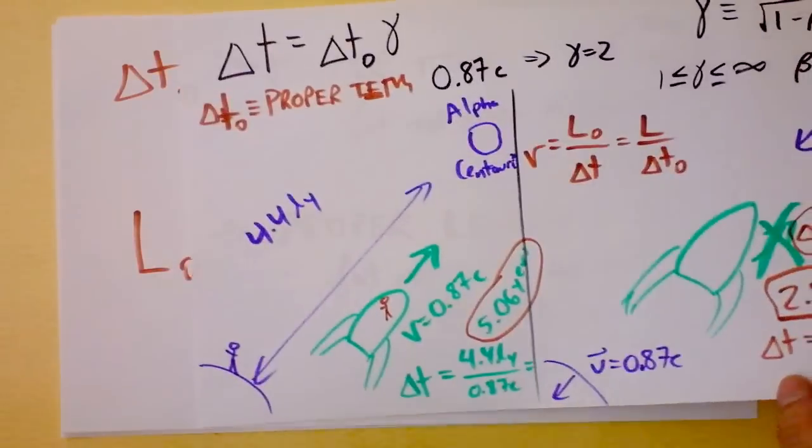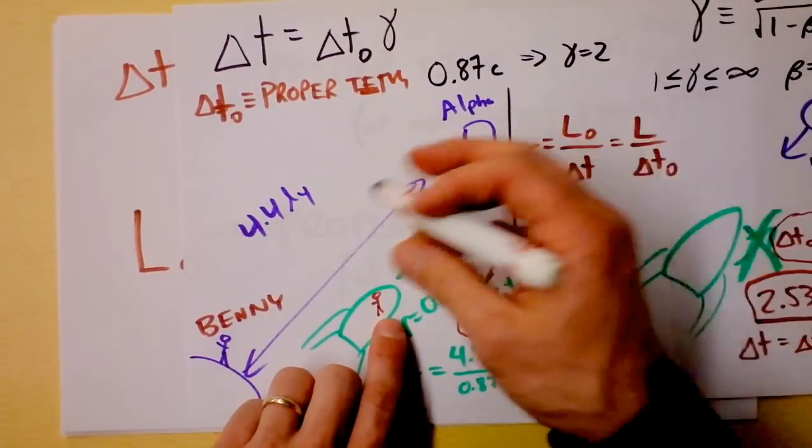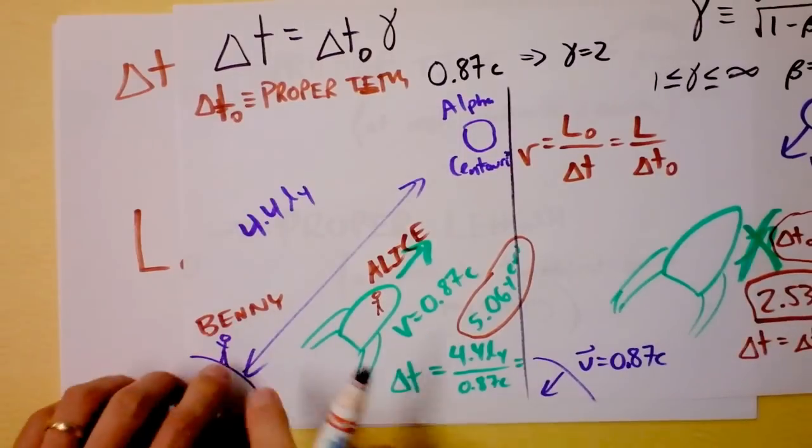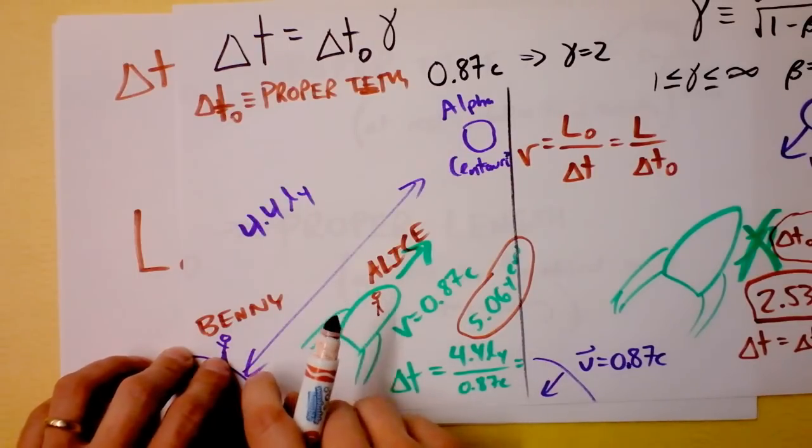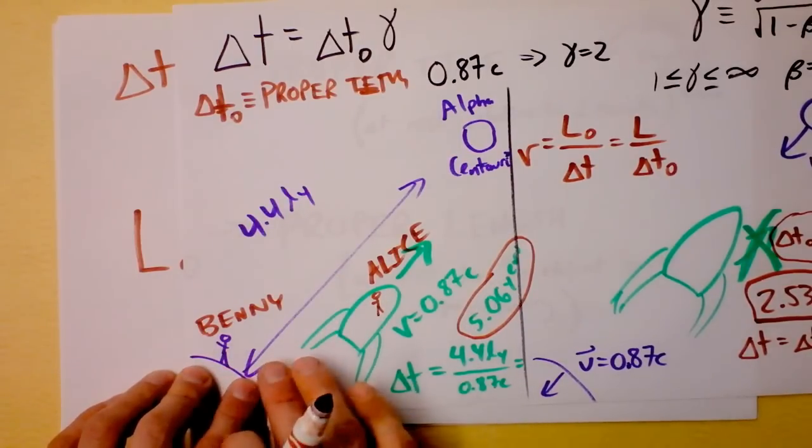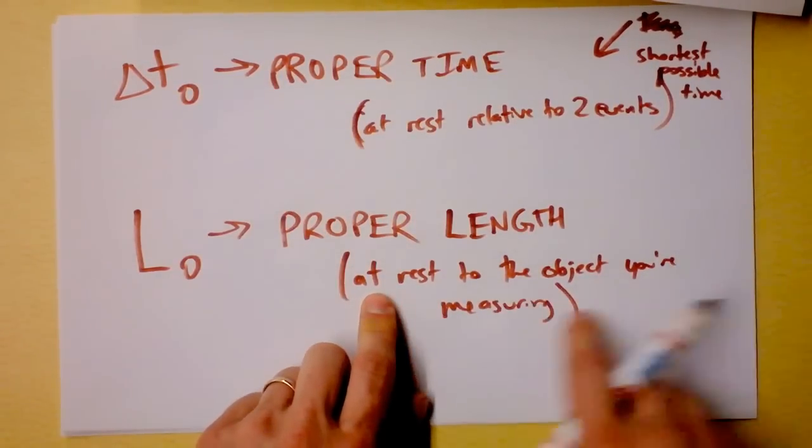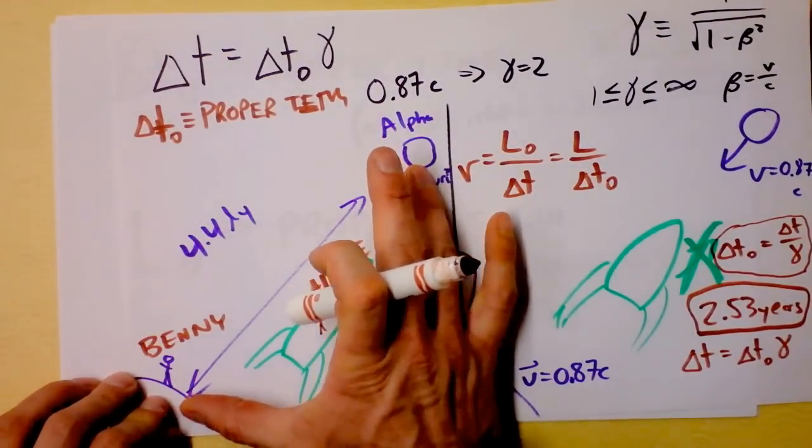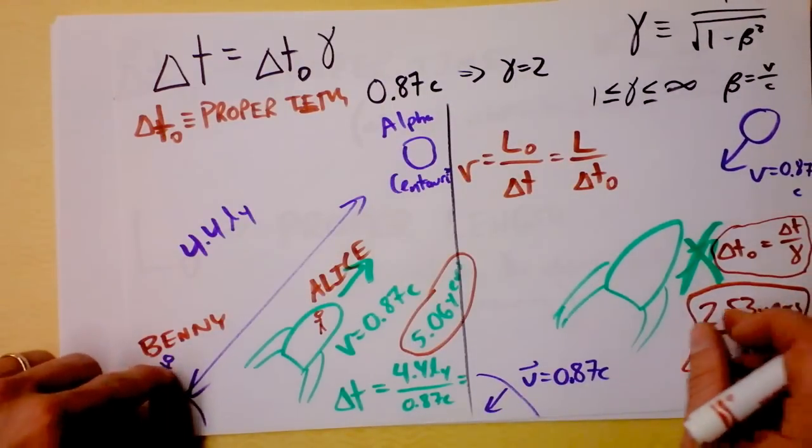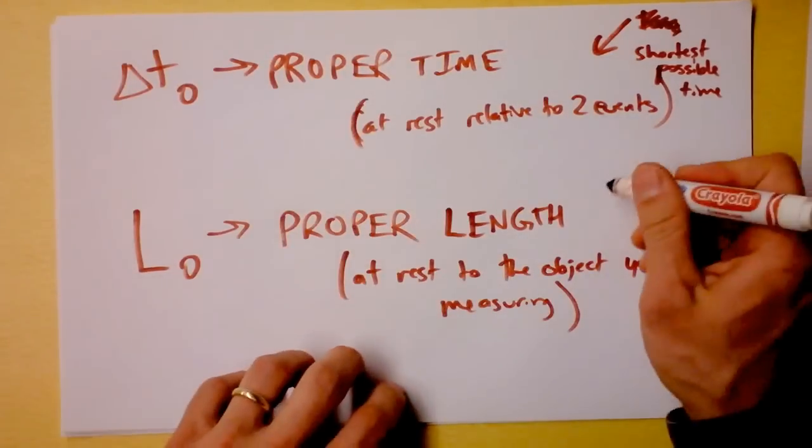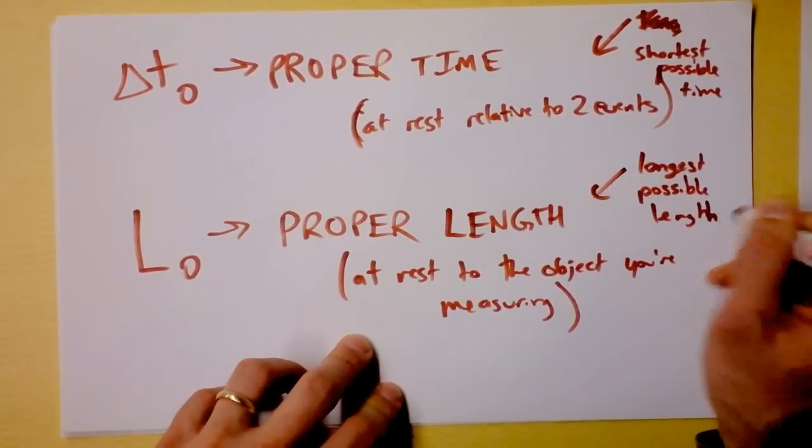So let's give names to these two people. The person on Earth, I want to call Benny, and the person in the rocket ship, I want to call Alice. So Benny is observing, if Alice is going from there to there, is Benny observing the proper length or the proper time for the event of Alex blasting off and then getting to Alpha Centauri? Look at these definitions. Is Benny at rest relative to the object that he's measuring? The object is this space right here. And Benny is at rest relative to Earth and relative to Alpha Centauri. So Benny measures proper length. This is the longest possible length.